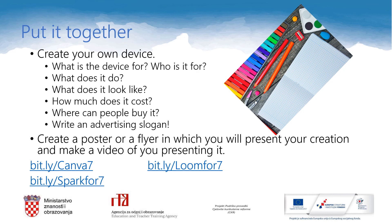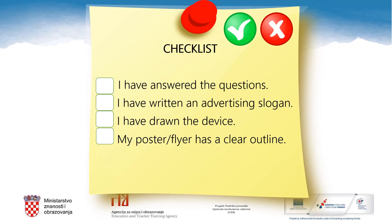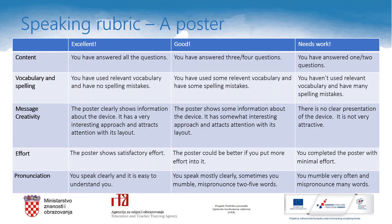Here are some digital online tools you can use to help you with the task. To make sure you have covered everything necessary, use this checklist to evaluate your work and put a tick next to the steps you have completed: I have answered the questions. I have written an advertising slogan. I have drawn the device. And my poster or flyer has a clear outline. Your teacher will assess your work using this speaking rubric. There are five criteria to be assessed: content, vocabulary and spelling, message of the poster and creativity, effort, and pronunciation.